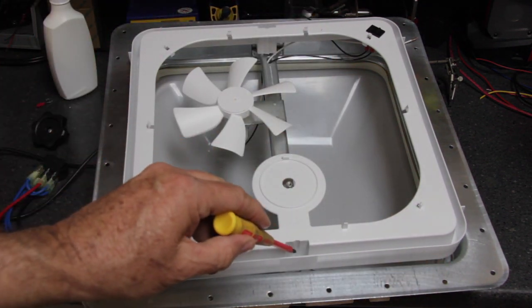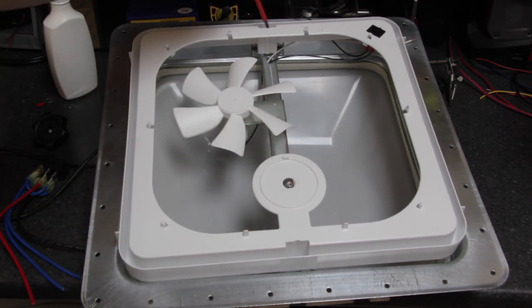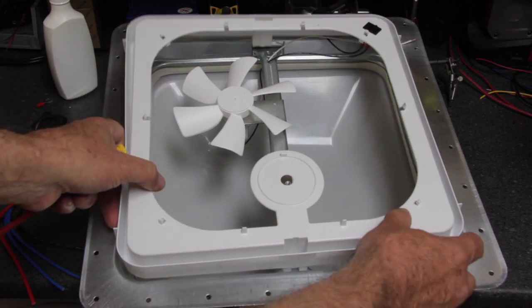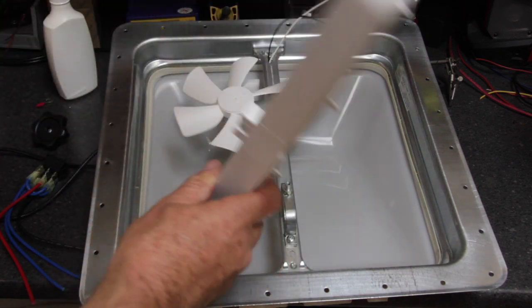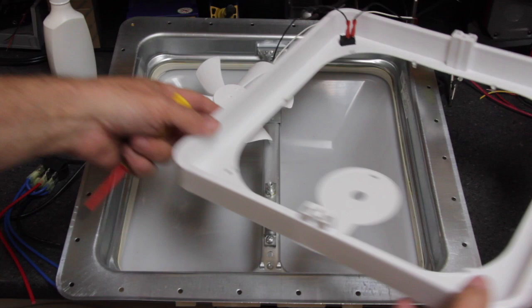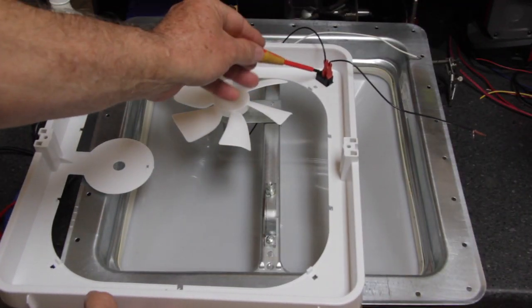At this point there's little tabs down at the bottom and up at the top. We want to push those little tabs in so we can then remove and flip over the inside cover so we can get at the switch.